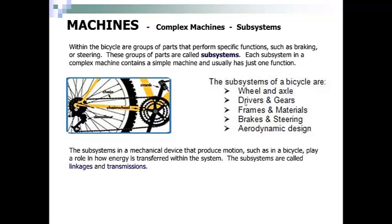Subsystems in a mechanical device that produces motion, such as in a bicycle, play a role in how energy is transferred within the system. These subsystems are called linkages and transmissions.